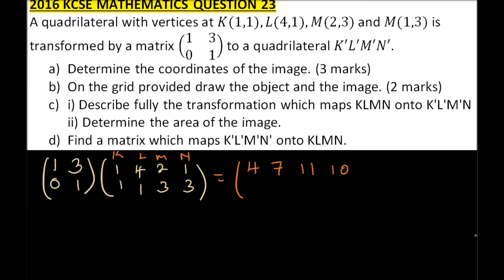For the bottom row: 0 times 1 is 0, then 1 times 1 is 1, so that will be 0 plus 1, giving you 1. Because the bottom row of the transformation matrix is [0,1], this row repeats itself since we are multiplying by 1, so the y-coordinates remain unchanged.